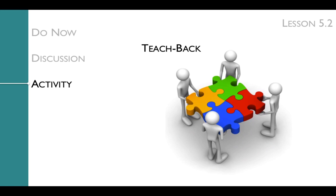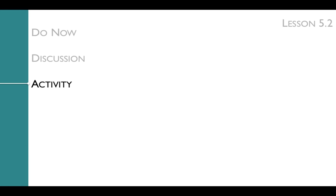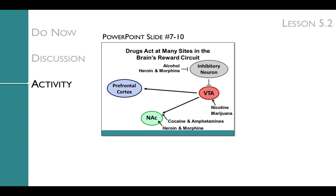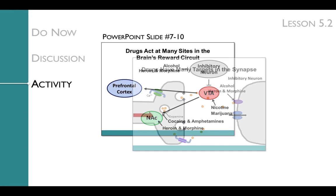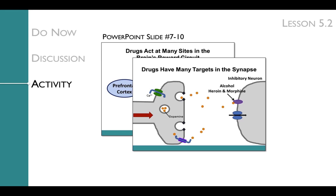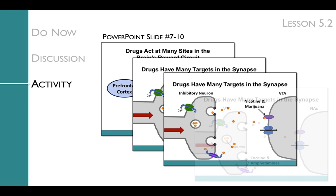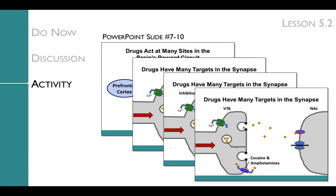After students have completed their jigsaw readings and taken notes, you'll organize a teach-back in which students will teach each other about the drug they investigated. This could be organized as small group discussions or done as an entire class. During the teach-back, you may choose to use slide 7 to help your students see where each drug acts within the reward pathway, and slides 8 through 10 to demonstrate that the drugs have different targets within the synapse. Slides 8 through 10 are organized in the order of synapses within the reward pathway: first the synapse leading to activation of the inhibitory neuron, then the synapse between the inhibitory neuron and the VTA, and finally the synapse between the VTA and nucleus accumbens. Each of these synapses has different receptors, which is why different drugs act at different sites in the brain or reward pathway.